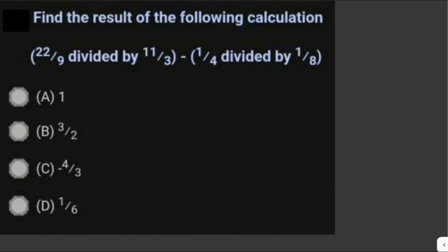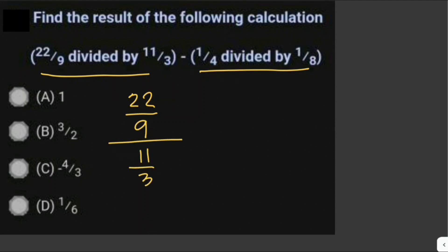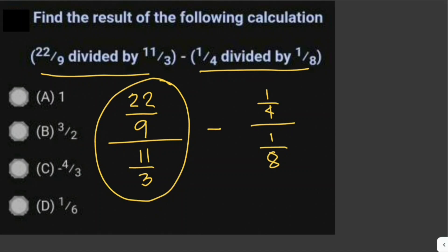Find the result of the following calculation: 22 over 9 divided by 11 over 3, minus 1/4 divided by 1/8. Let's solve 22 over 9 divided by 11 over 3 first. That is equal to 22 over 9 times 3 over 11.